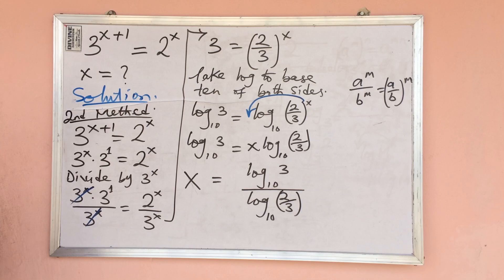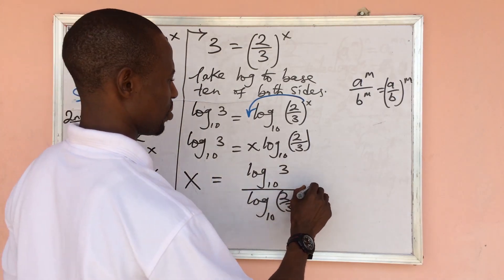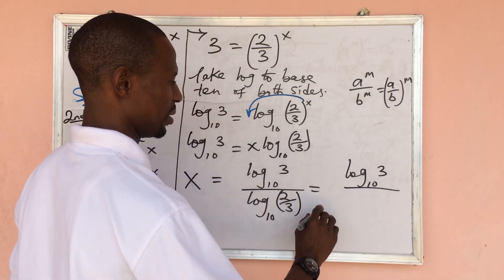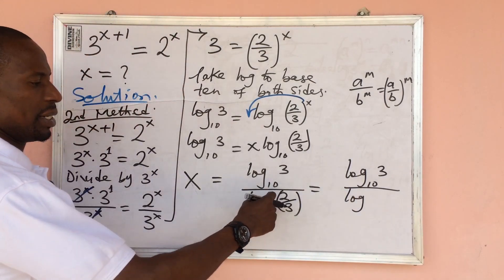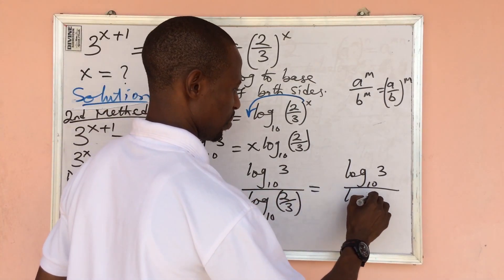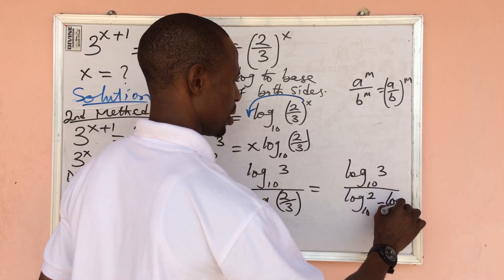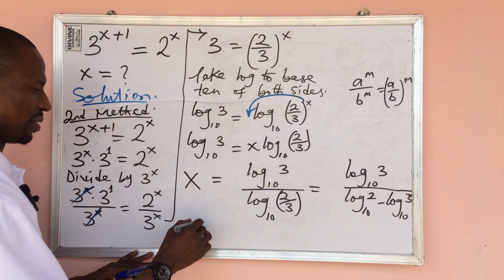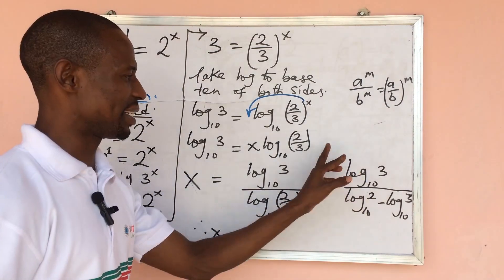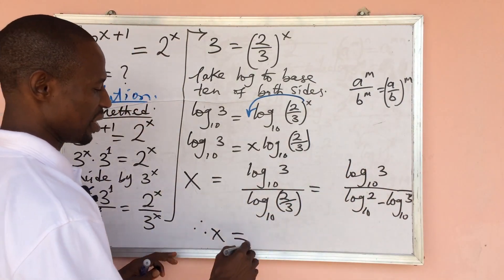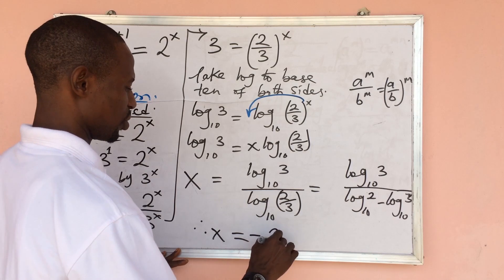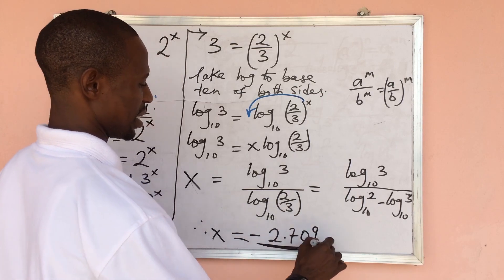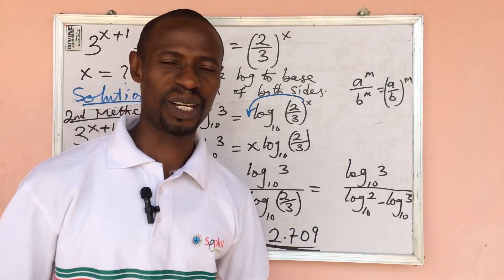Simplifying, x equals log base 10 of three, over — applying the divisional law of logarithm — log base 10 of two minus log base 10 of three. Using a calculator, this gives x equals approximately minus 2.709, which is the same answer we got from the first method.